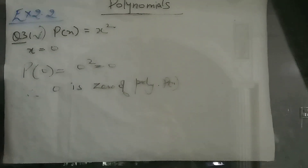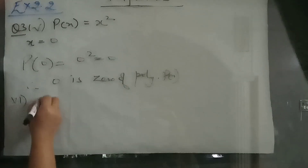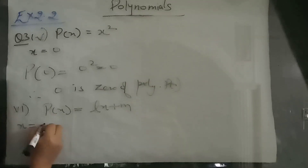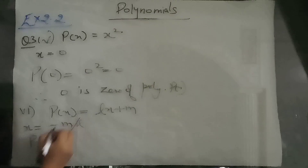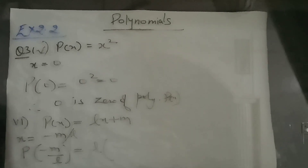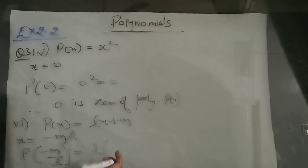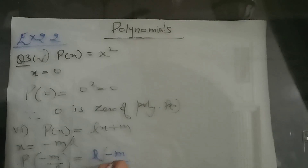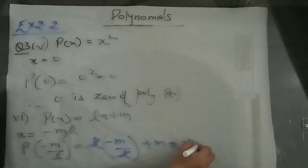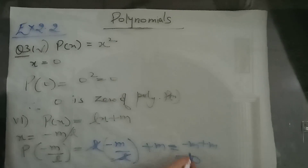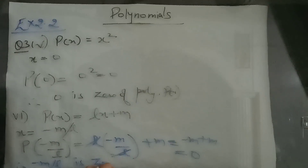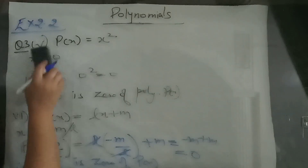For the sixth part, p of x is equal to lx plus m and x is minus m by l. Put minus m upon l in place of x: l into minus m upon l plus m. L and l got cancelled, giving minus m plus m, which is 0. So minus m by l is the zero of the polynomial p(x).